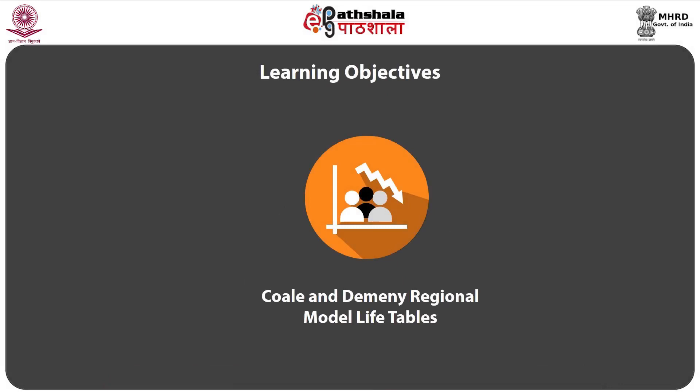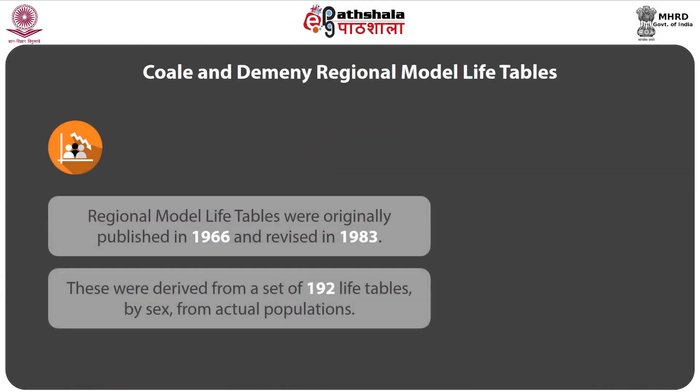In this module, we will be learning about the Regional Model Life Tables developed by Coale and Demeny. The Coale and Demeny 1983 Regional Model Life Tables were originally published in 1966 and revised in 1983. They were derived from a set of 192 life tables by sex from actuarial populations, including 39 from before 1900 and 169 from after the Second World War, mostly from Western countries. Europe, North America, Australia, and New Zealand contributed a total of 176 tables.